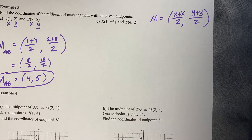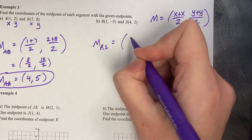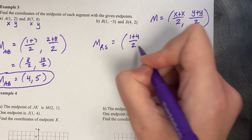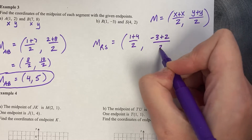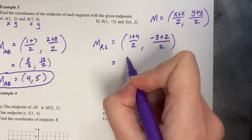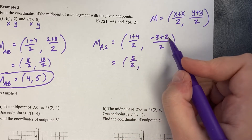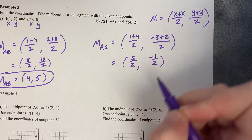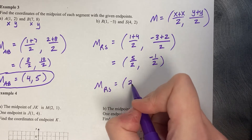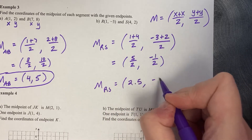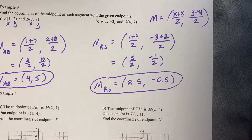Second example — find the midpoint of RS. Average of the X's: 1 plus 4 over 2. Average of the Y's: negative 3 plus 2 over 2. That gives us 5 over 2 and negative 1 over 2. For midpoints, it's appropriate to change them to decimals: 2.5 comma negative 0.5, because we may place it on a coordinate grid.